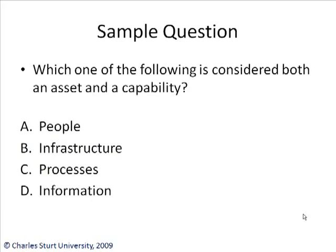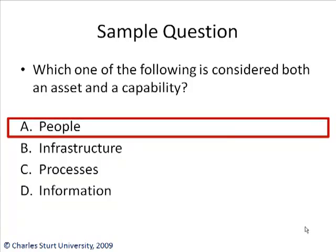Knowing my little videos by now, you always get a sample question with the theory. Here's the question: which one of the following is considered both an asset and a capability? I'll give you a couple of seconds to think about the answer. Of course, the correct answer is people. People are both assets and capabilities — especially capable people have become capabilities.